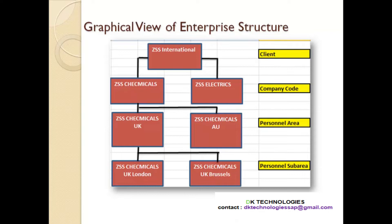One important thing: the personal area is assigned to one company code only. Meaning the personal area ZSS Chemicals Australia cannot be assigned to both ZSS Chemicals and ZSS Electrics — it will be assigned to only one company code. Because the company code takes care of profit and loss transactions, that personal area ultimately reports all profit and loss transactions to that one company code.